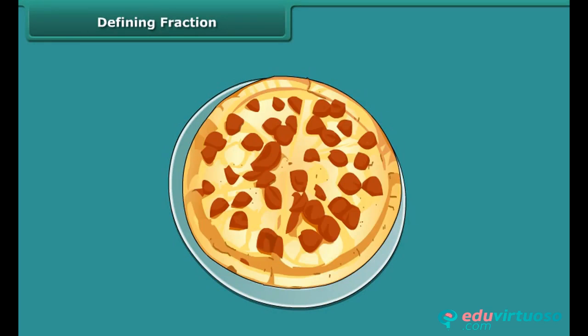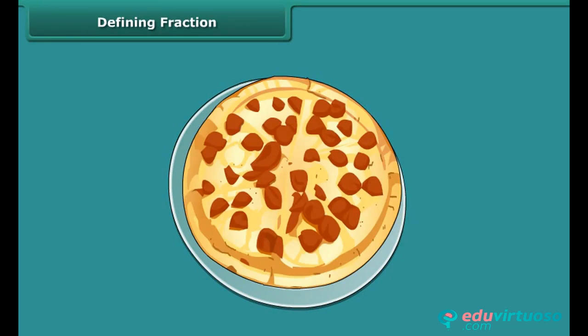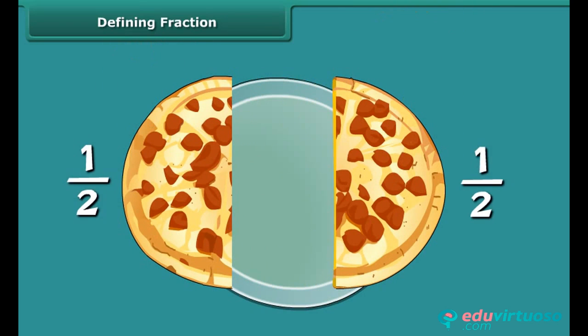Fraction indicates part of a whole thing. 1 upon 2 means that one whole thing is divided into two equal parts, and one part out of these two parts is taken.